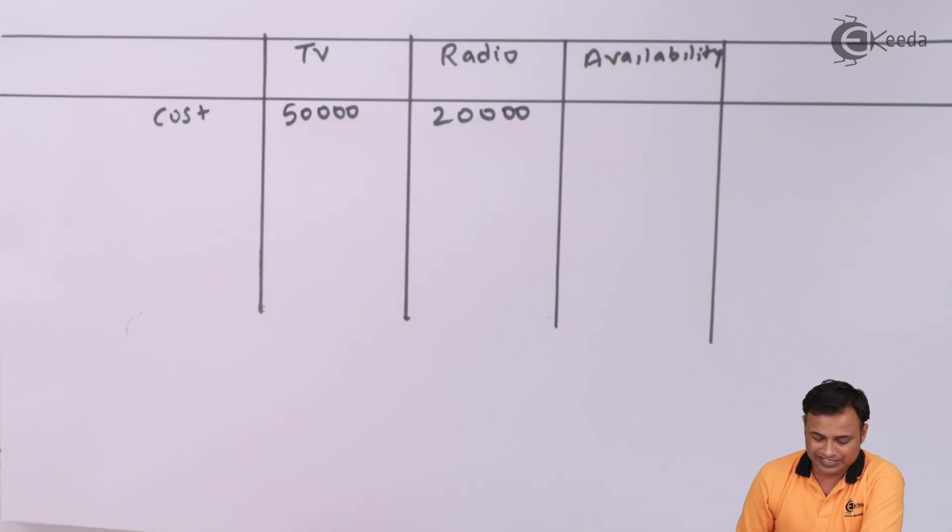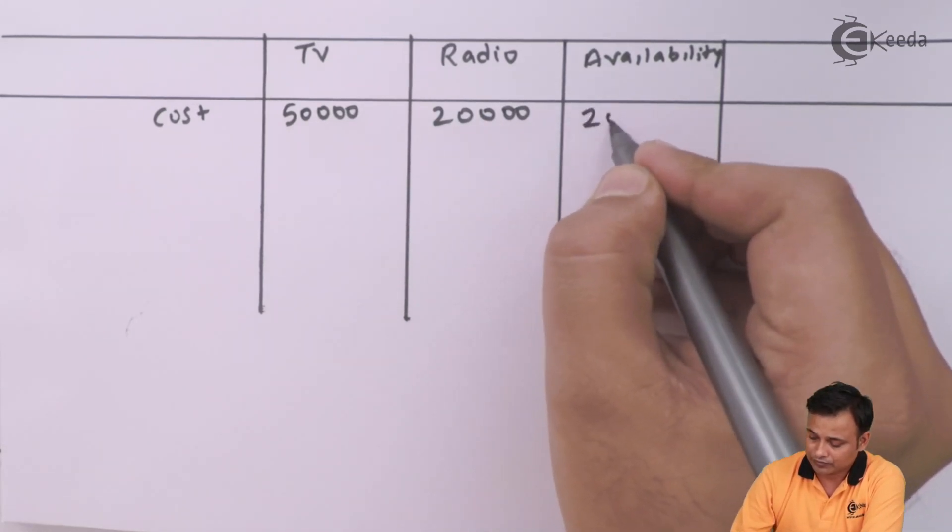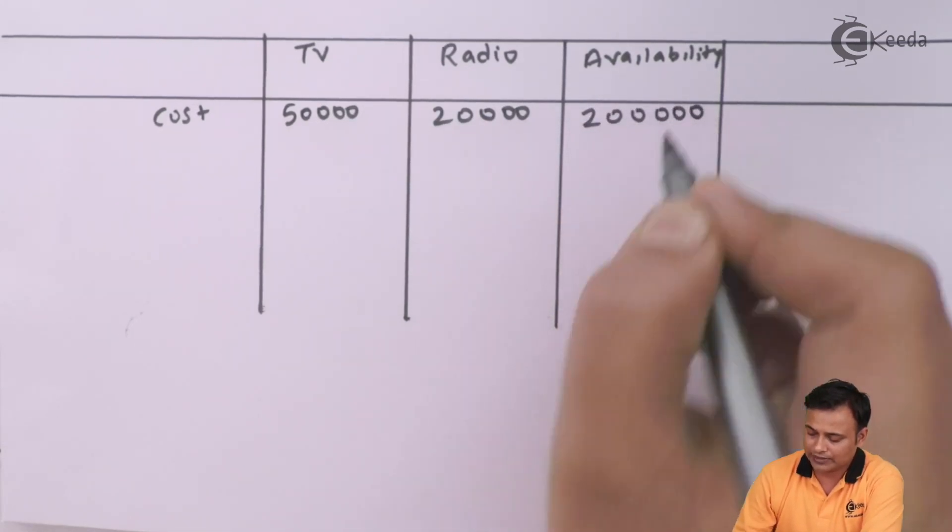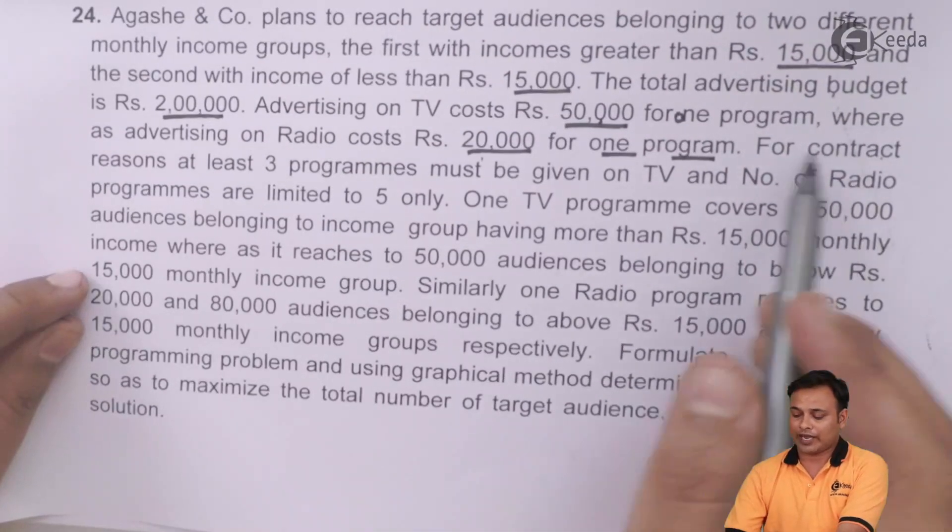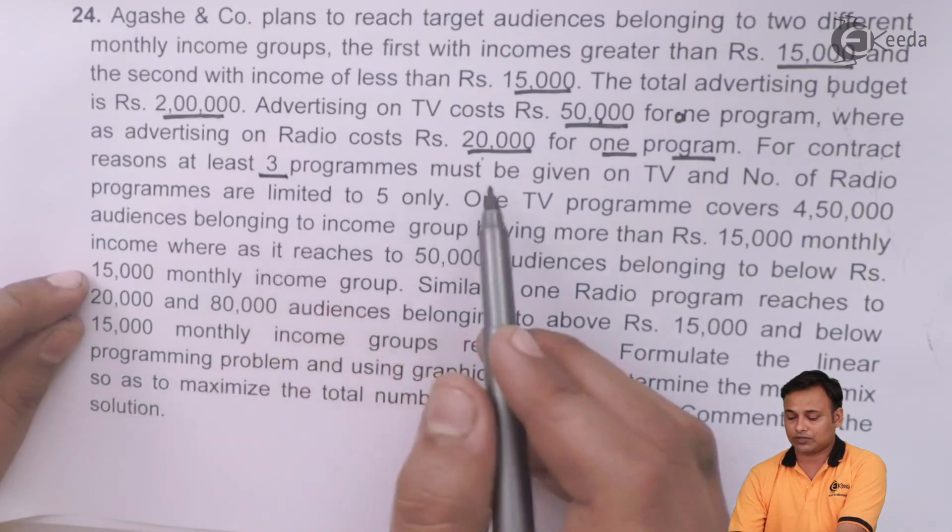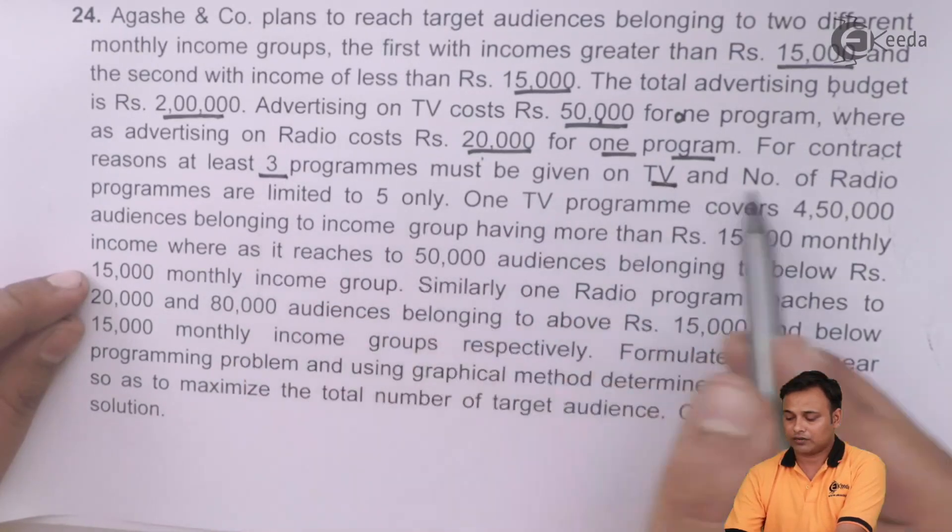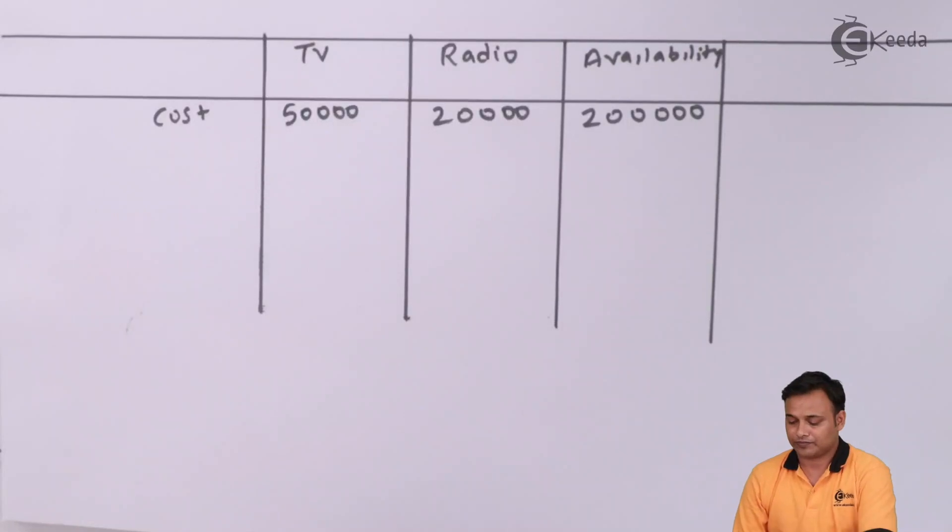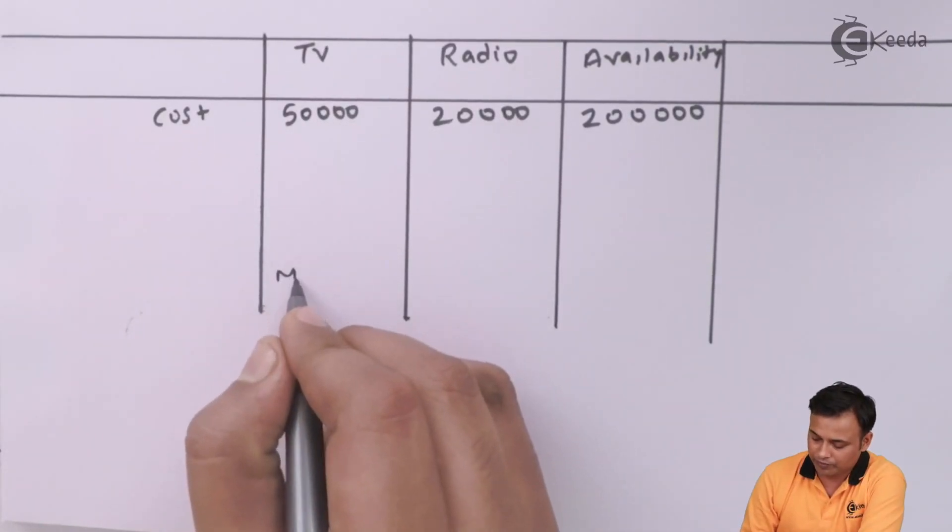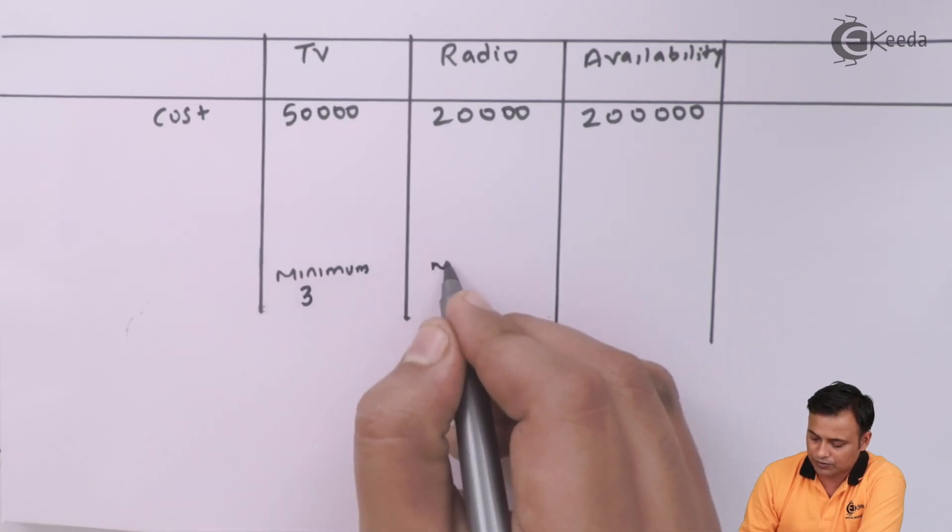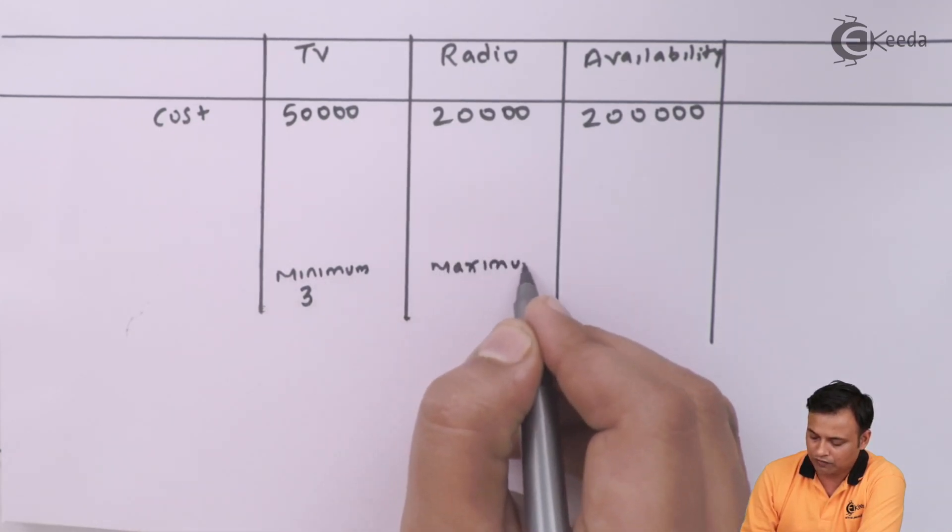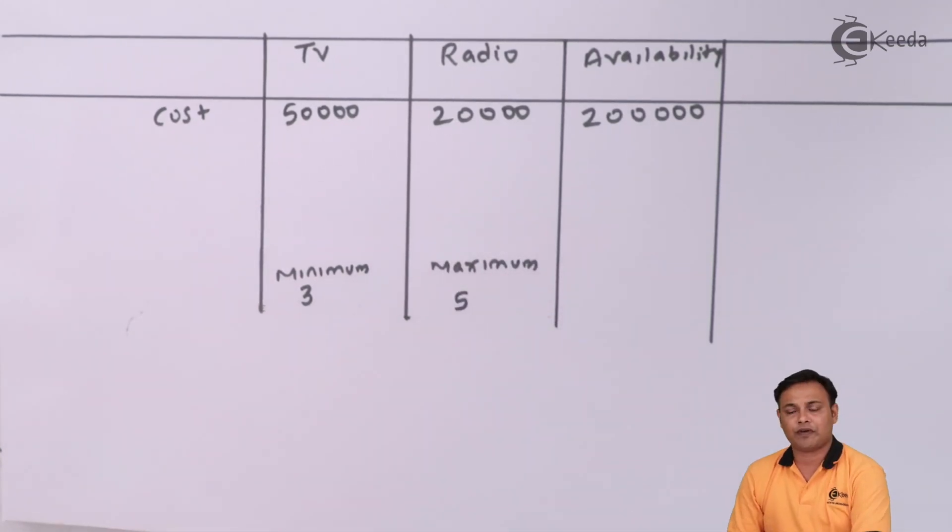And my total budget is Rs. 2,00,000. Then they are given for contract reasons at least three programs on TV and radio programs are limited to five. So minimum three programs on TV and maximum five on radio.